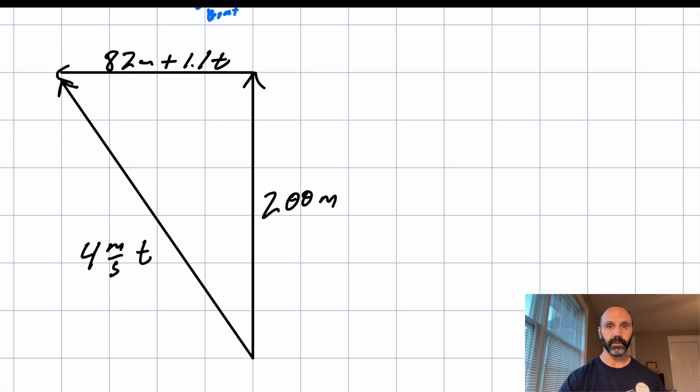That'll give me that distance relative to the water. Realize that that hypotenuse, if I wanted to draw that hypotenuse relative to the shore, that would be more challenging because it's not just four meters per second t. It would be four meters per second minus the cosine of whatever the angle is. And we don't know the angle yet. So there might be a way to do that, but this is the way that I've chosen to go about it.